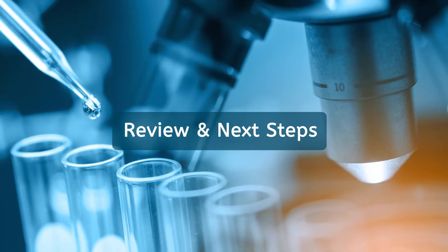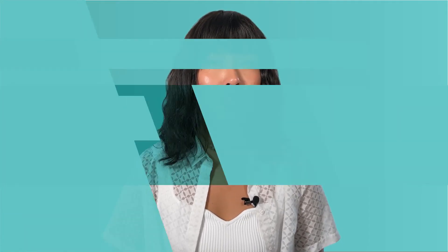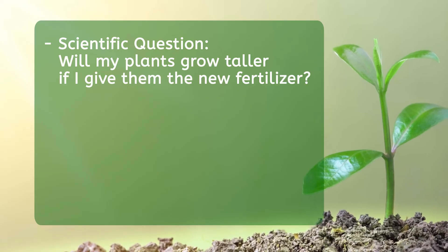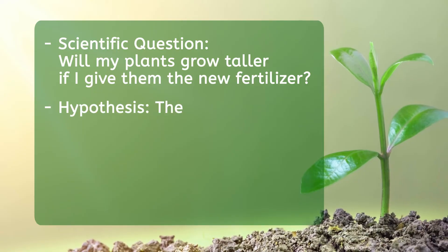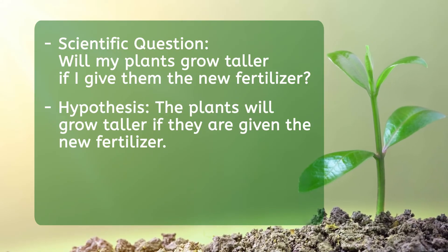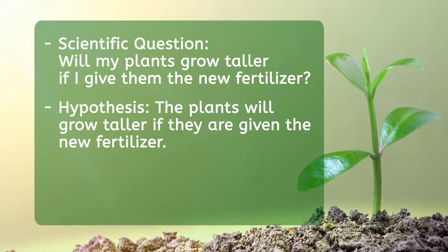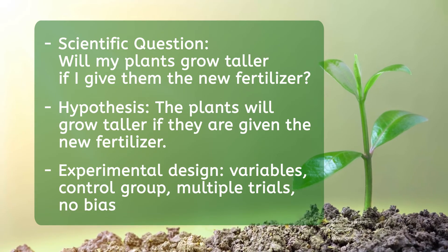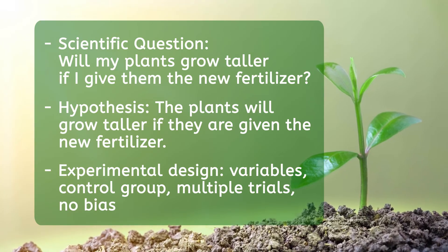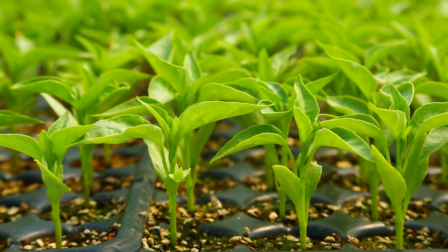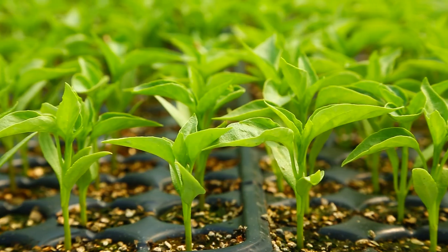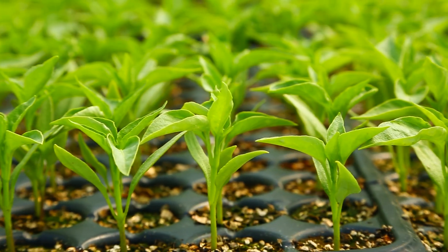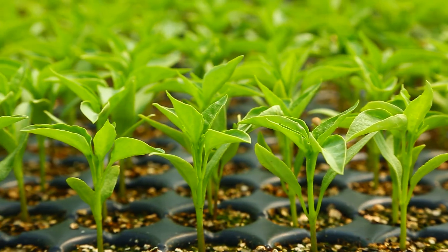Now we are ready to review and talk about next steps. We came up with a good scientific question that was testable: will my plants grow taller if I give them the new fertilizer? Then we made a prediction or hypothesis: we hypothesized that the plants would grow taller if they were given the new fertilizer. We looked at aspects of experimental design that will ensure our experiment gives us good results, like defining independent and dependent variables, making a control group, setting up multiple trials, and avoiding bias. So our experiment is all set up — the identical plants all tucked into their cozy identical pots, getting the same amount of water, the same soil, with a completely objective person in charge of watching them grow.